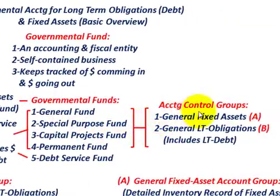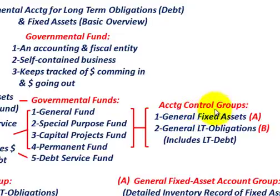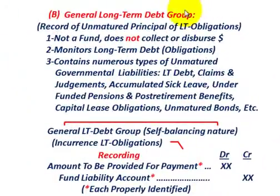Let's go over our accounting control groups. We have the general fixed asset accounting control group, and then the general long-term obligation control group, which includes our long-term debt. We can keep track of these control groups for each of the funds separately. Let's first look at the general long-term debt group.